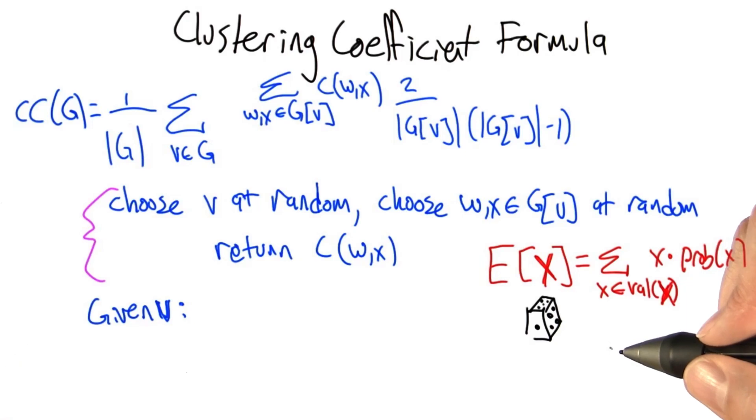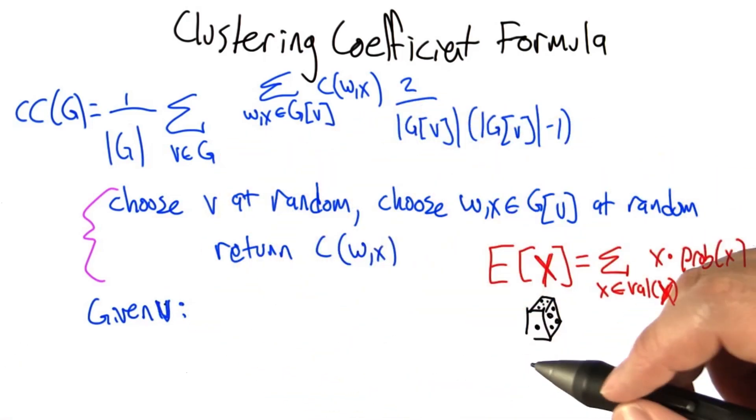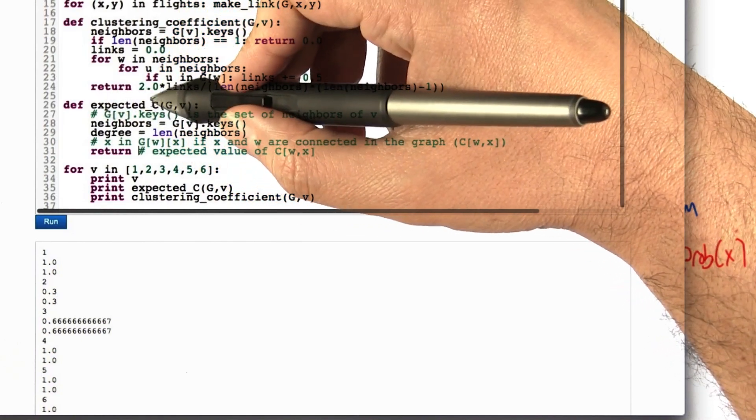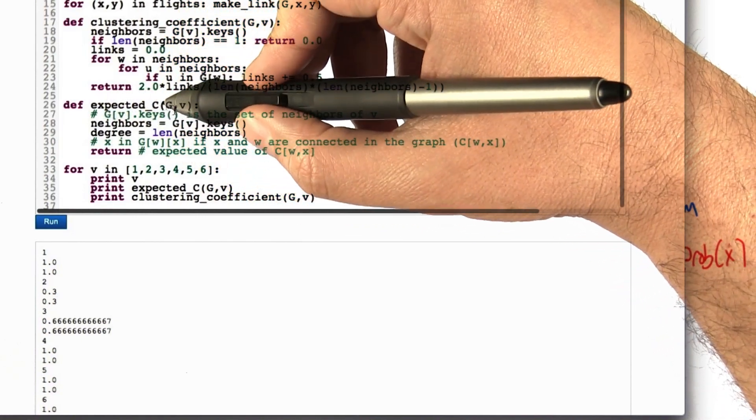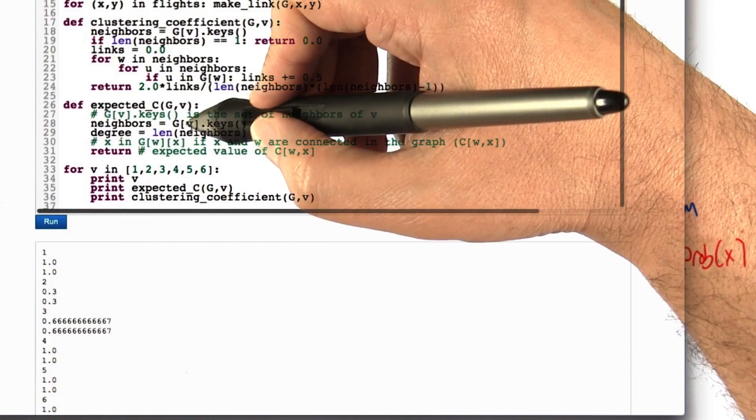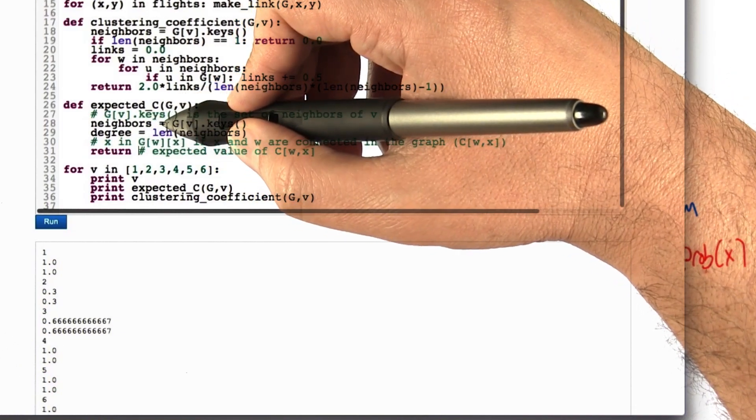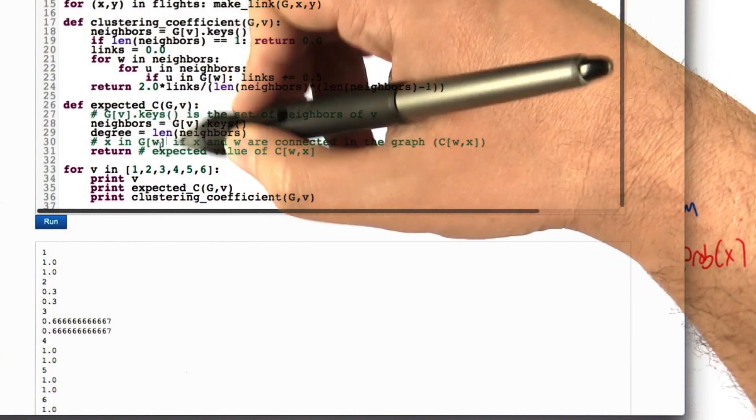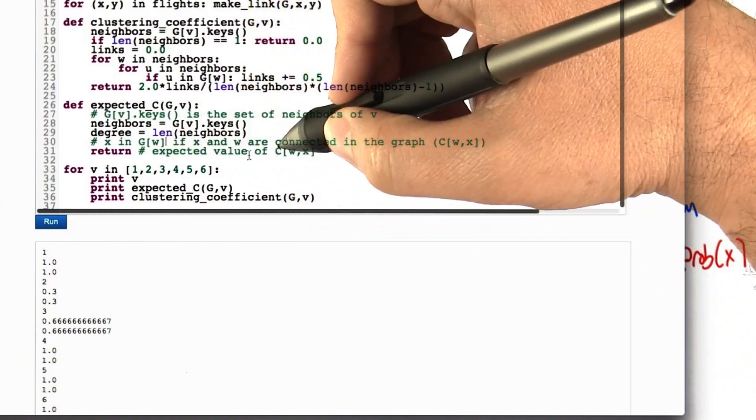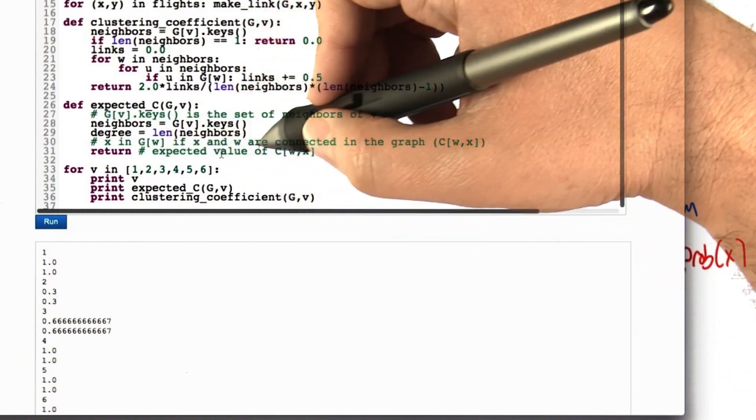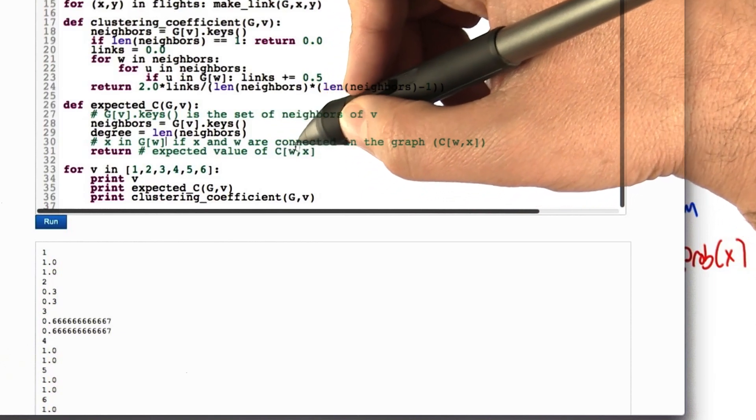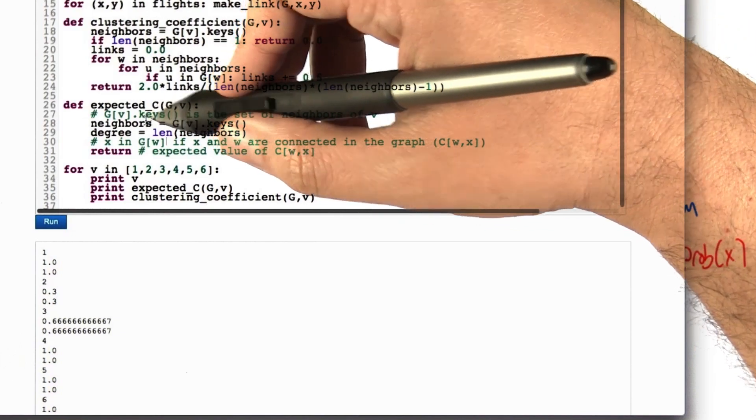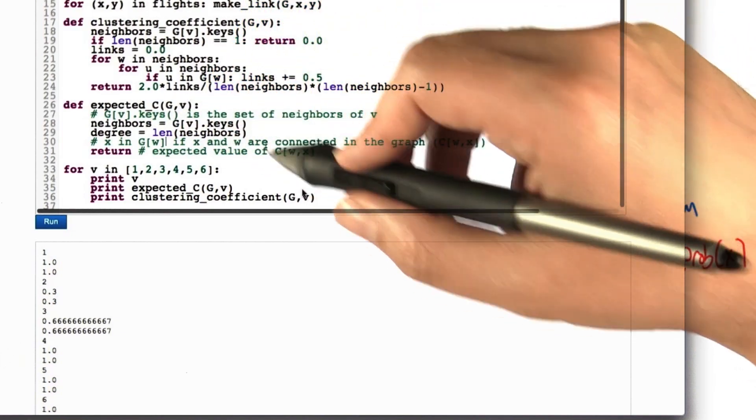So given that, and if we're given a v, what's the expected value of c, w, x? Maybe I should ask you. Here's a skeleton to get you started. I'd like to know the expected value of this c, this connectivity variable, given a graph g and a node v of that graph, and I'll predefine for you the set of neighbors of v and the degree of v, the number of neighbors. The expression x in g of w is true if x and w are connected in the graph. So those are the pieces that you need. Calculate this value exactly, the expected value of the connectivity of w and x for uniformly randomly selected w and x from the set of neighbors.